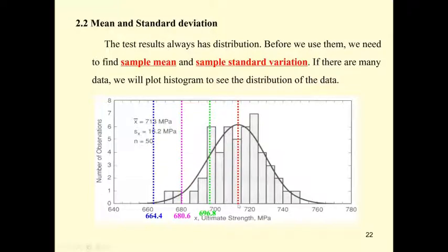If we use the mean, the reliability is only 50%. If you use the mean minus one standard deviation, that increases to about 85% reliability. Mean minus two times the standard deviation gives about 97% reliability. And if you go to the mean minus three standard deviations, that's nearly 100%. So this is the application of the mean and the sample standard deviation.